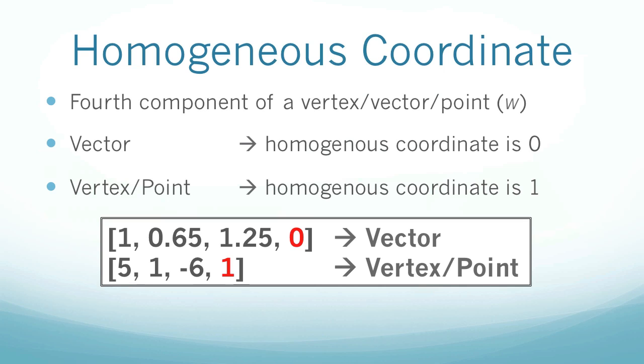And then there's this example here. You can see the first line, the homogeneous coordinate is zero, and therefore it's a vector, and in the second line, the homogeneous coordinate is one, and therefore it's a vertex or a point.